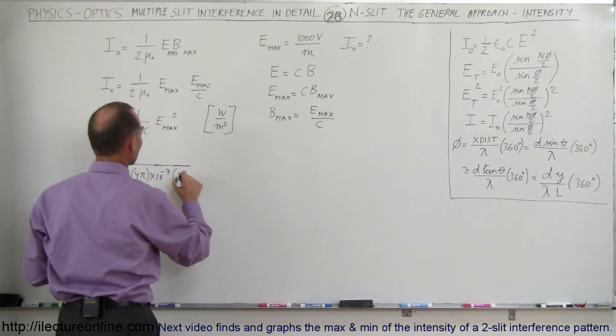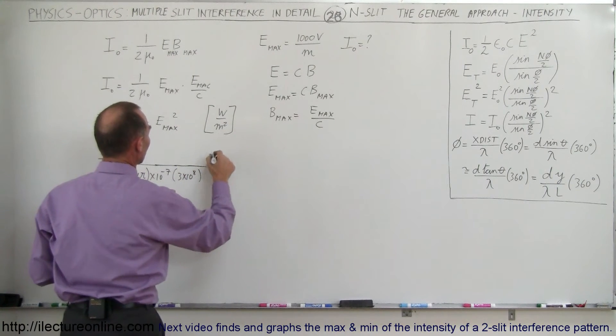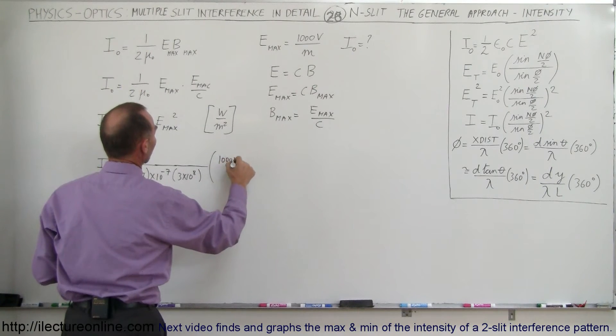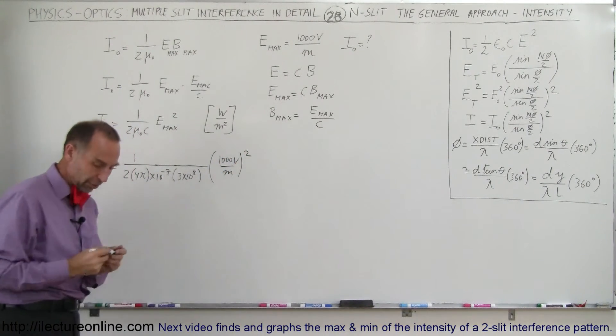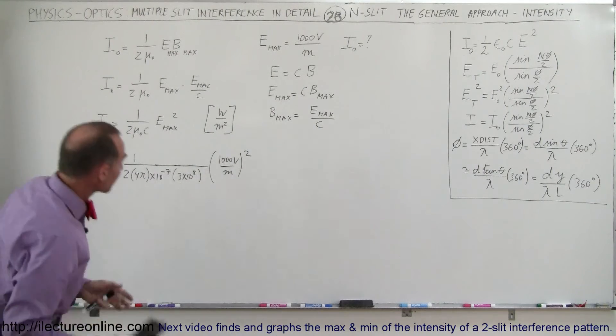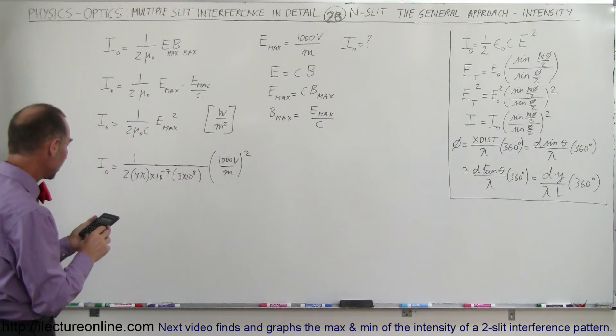C is 3 times 10 to the 8. And E max was going to be a thousand volts per meter, and we have to square that. Units will come out to be watts per square meter. And let's see what we get when we put that all into the calculator.